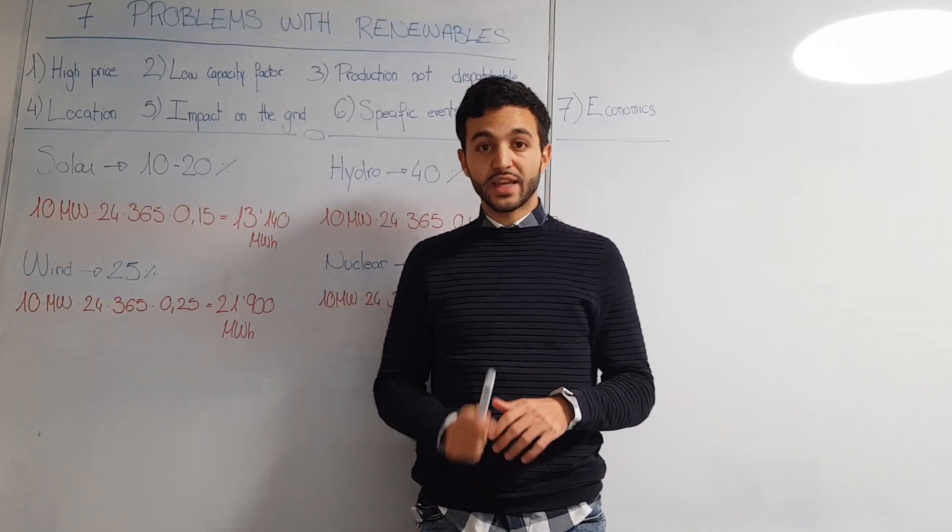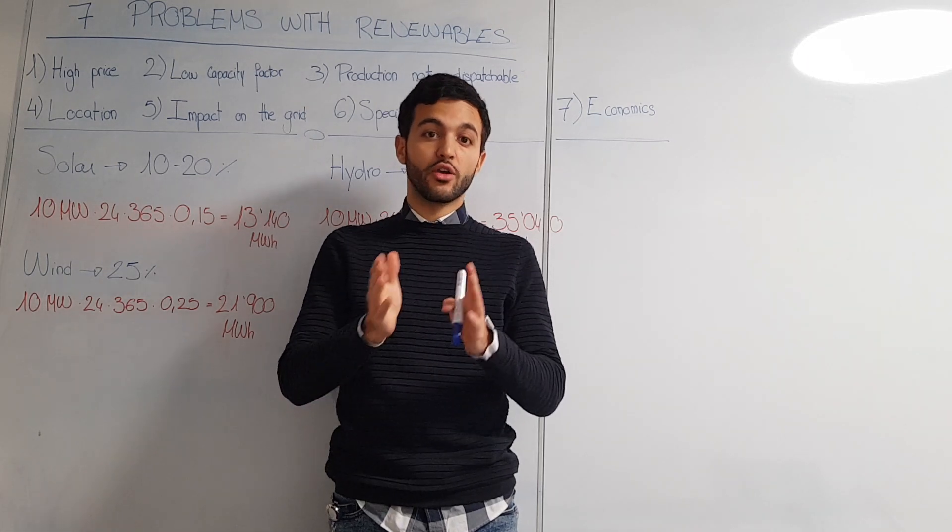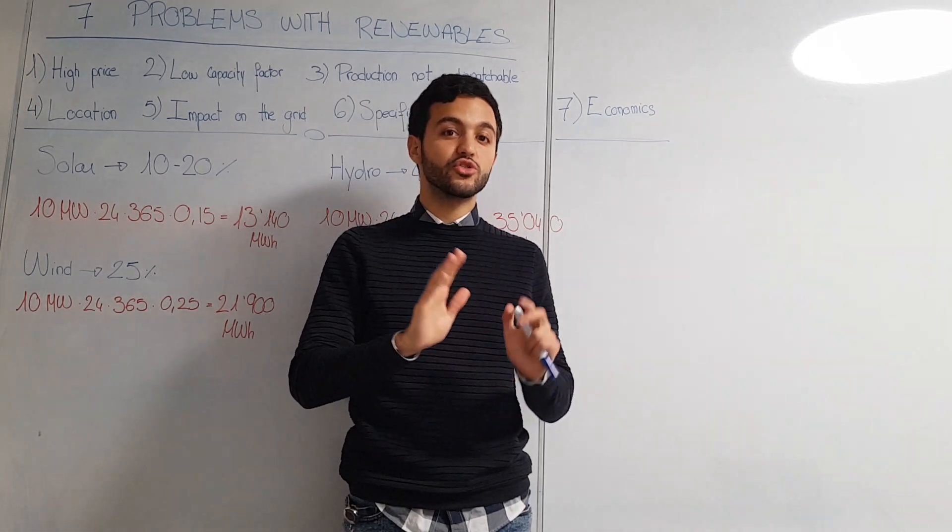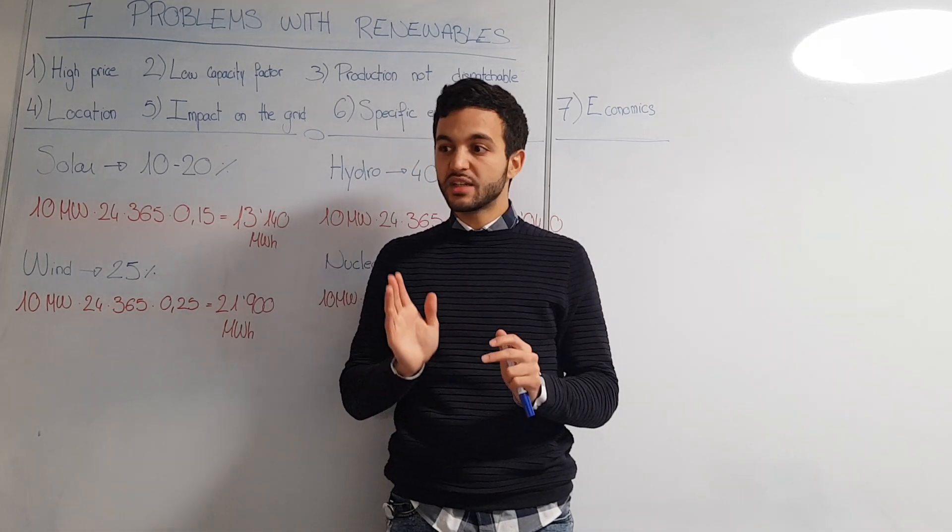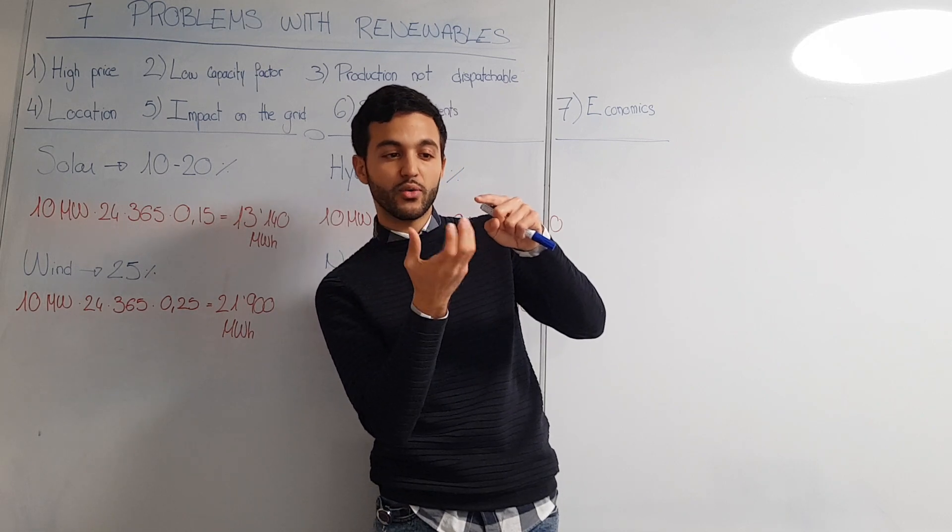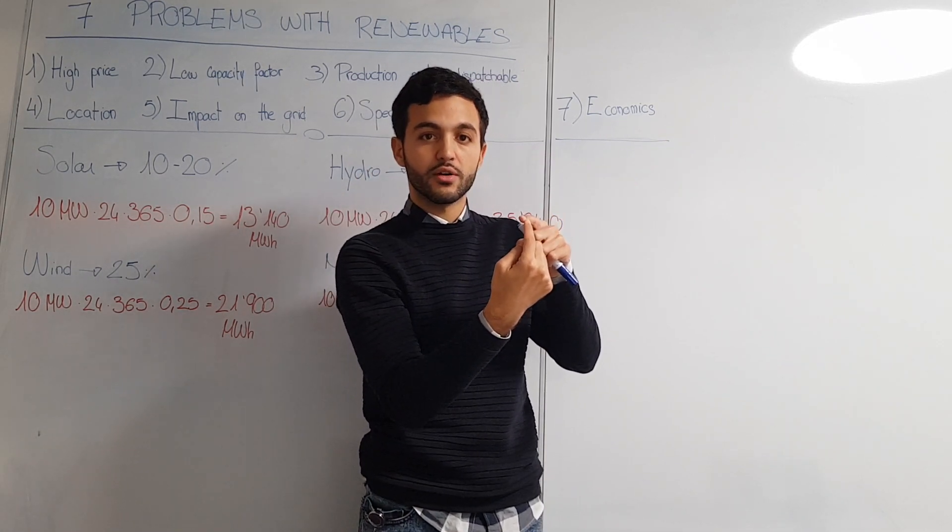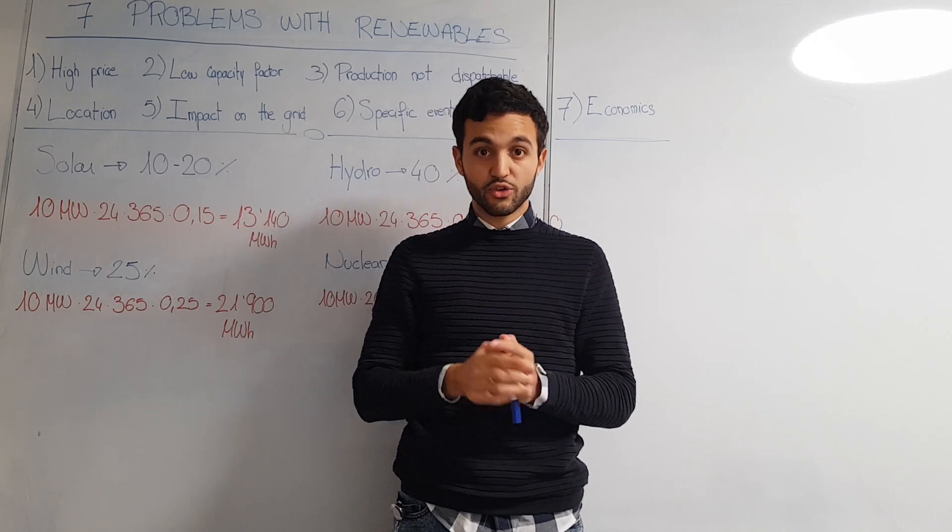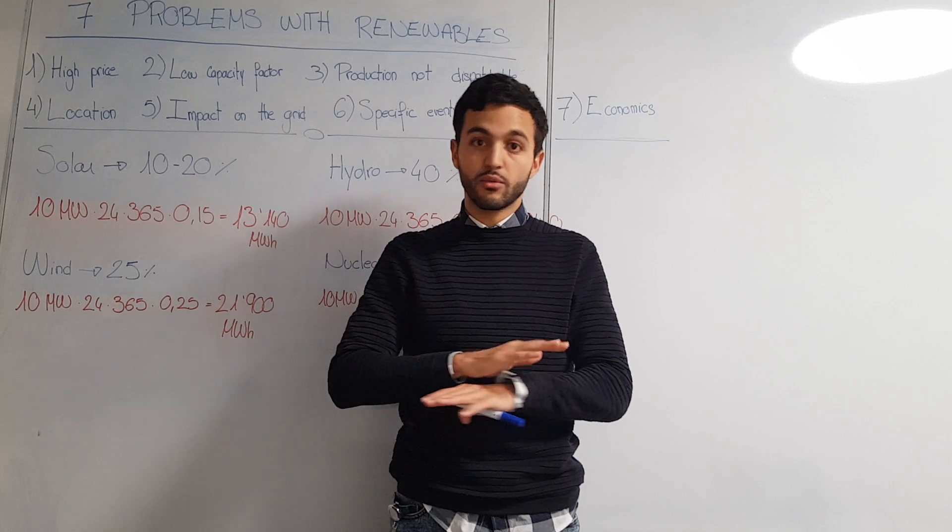The second point is the capacity factor. The capacity factor tells you how much you will produce in comparison to how much you theoretically are able to produce. For example with solar, imagine the earth is turning around and you have a satellite here which is not turning. The satellite would be able to take light from the Sun during the whole year. In this case the capacity factor would be 100% because the solar panel will produce at maximum all the time.